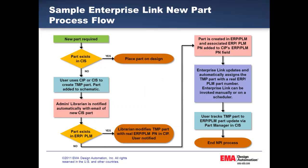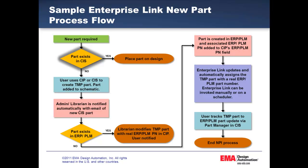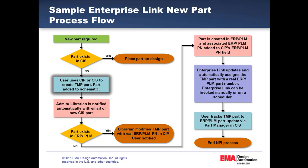Next, we'll look at a simple EnterpriseLink new part process flow. For example, if a new part is required and the part exists in CIS, the user would simply place the part on the design. If not, the user uses CIP or CIS to create a temporary part.